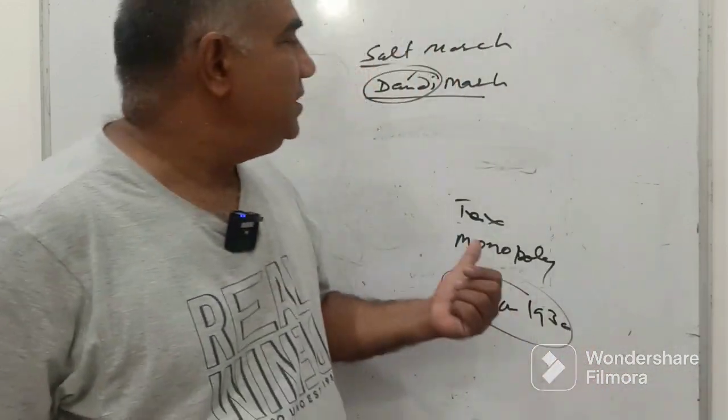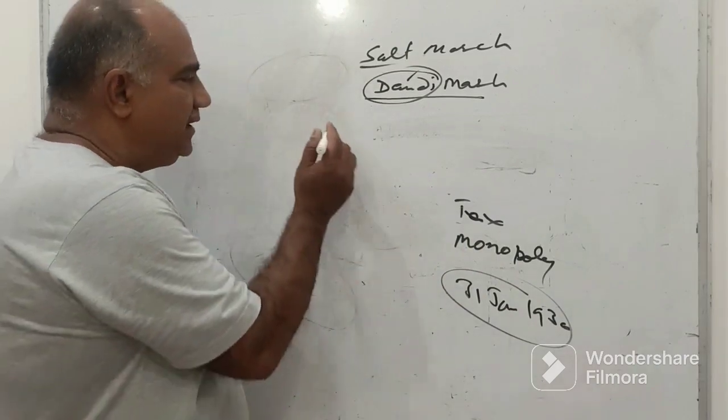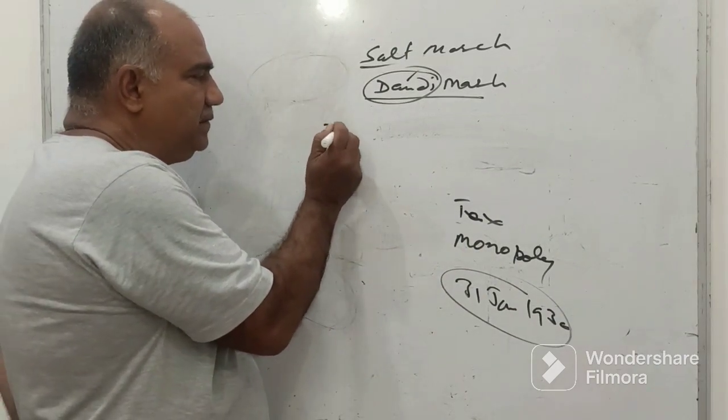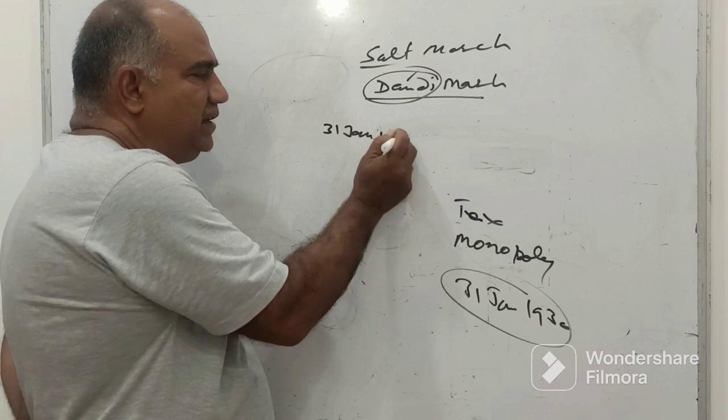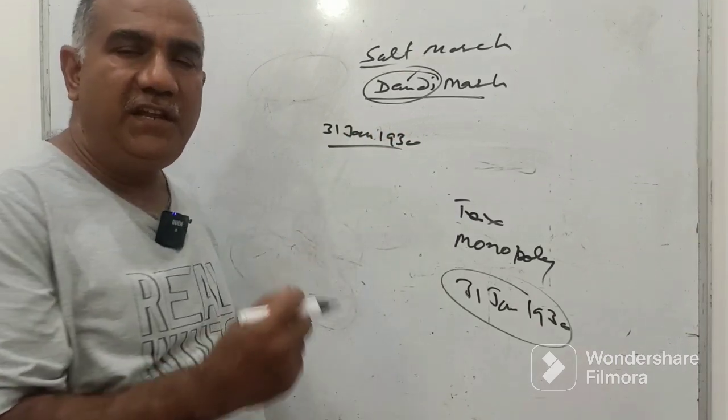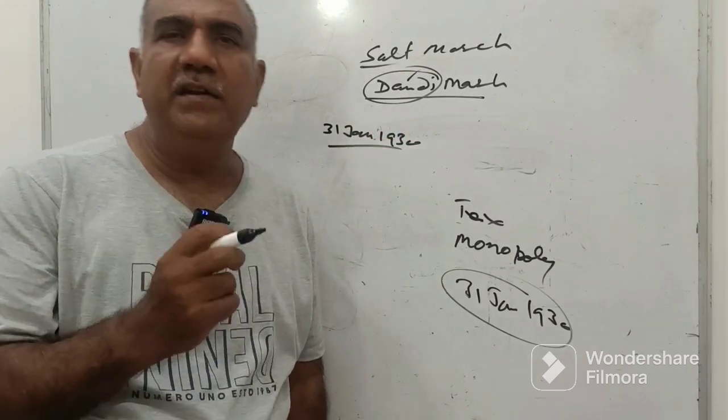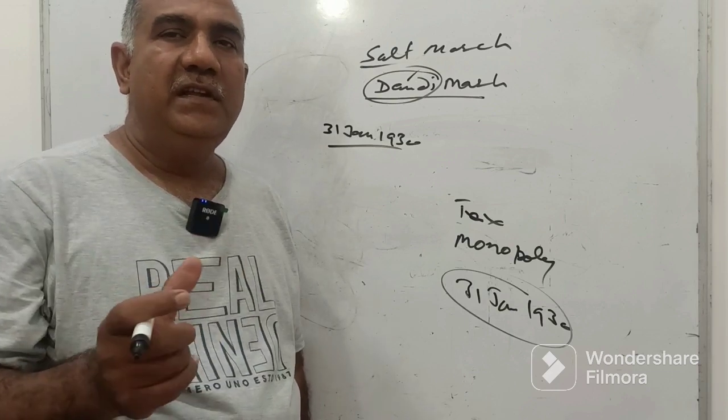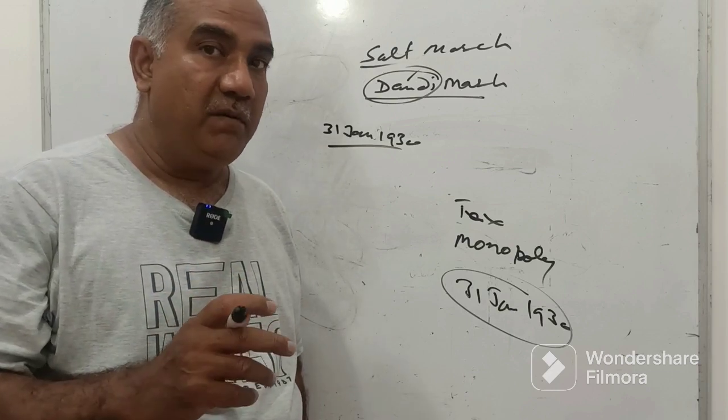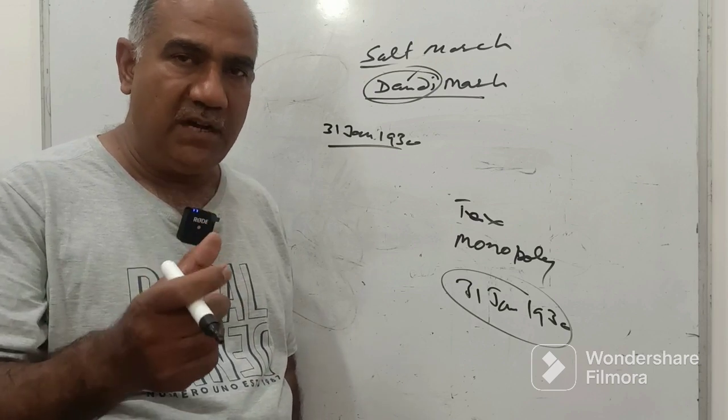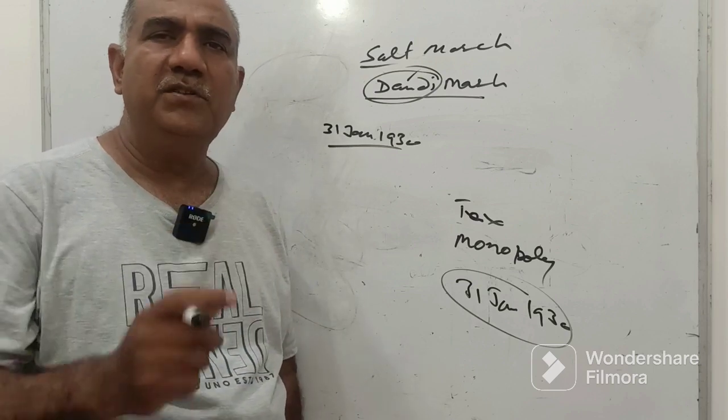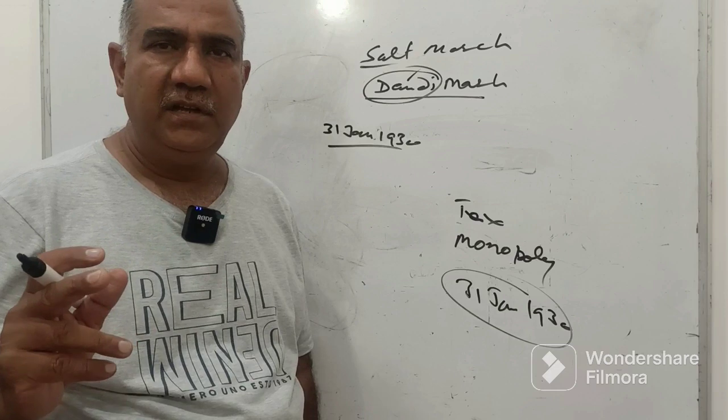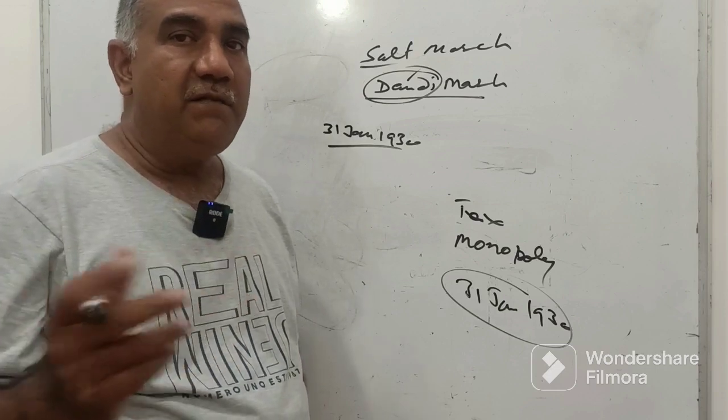Gandhi ji wrote a letter on 31st of January 1930 to Viceroy Irwin with some 12 demands. It was a sort of ultimatum to Irwin that if these demands are not met by the 11th of March 1930, from 12th of March onwards Gandhi ji will start a movement. Irwin was not willing to negotiate.